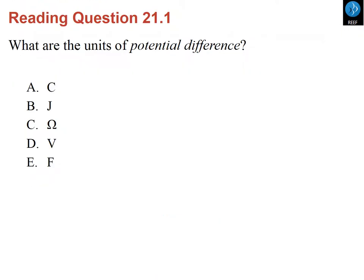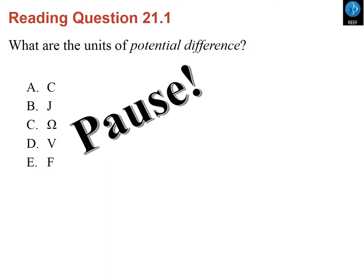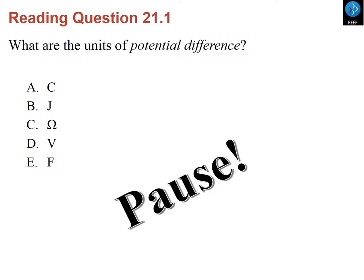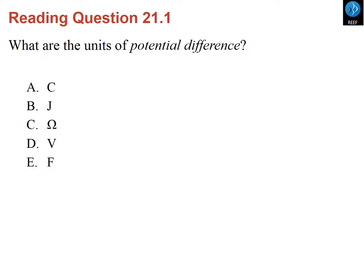Quick question: what are the units of potential difference? The answer is volts. We can also note that we haven't yet seen the symbol for resistance or the unit farads — those will come in a later chapter.